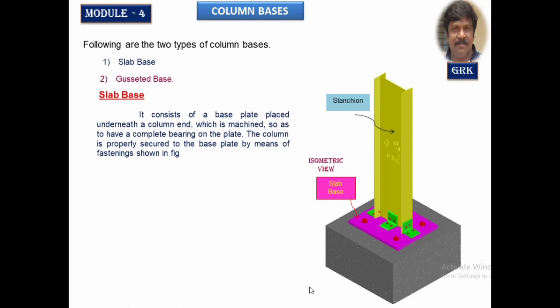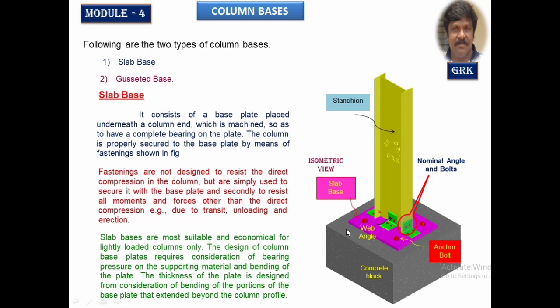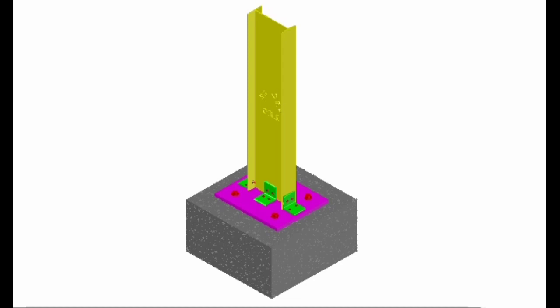This is a stanchion with the base slab, web angles nominally provided, and anchor bolts which need to be designed only if subjected to axial load along with moment. If it is only subjected to axial load, there is no need to design the anchor bolts — nominally we can provide one on each side, a maximum of two numbers, or four numbers. The fasteners are not designed; we are nominally going to provide 2 to 4 in number. Even the angle is not designed here. This type of slab base is the most economical, designed for lighter loads.